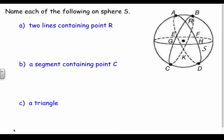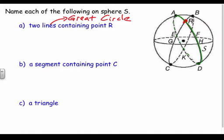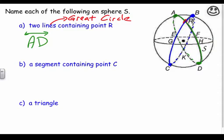Let's name two lines containing point R. Lines have to make a great circle in spherical geometry. I see two: line AD, where A and D are opposite poles, which goes through R and cuts the circle in half. And line BC, where B and C are also opposite poles, which also goes through R. So AD and BC are both lines on the sphere.